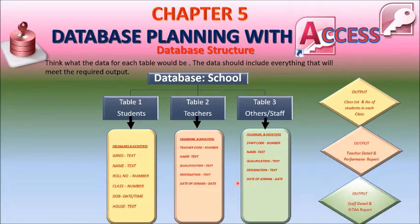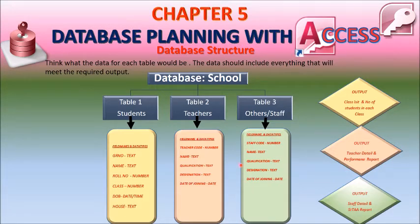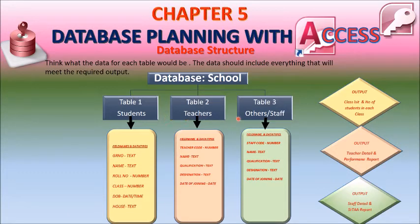The third table is for other staff — such as clerical staff and peon staff. The structure designed for this table includes: staff code, name, qualification, designation, and date of joining. So this is the complete database structure of the school, which is related to students, teachers, and other staff.